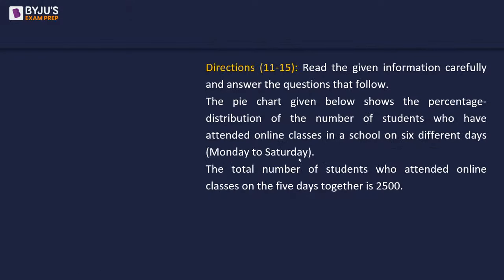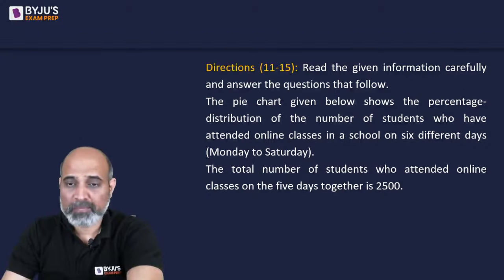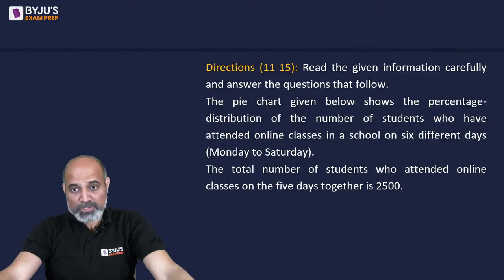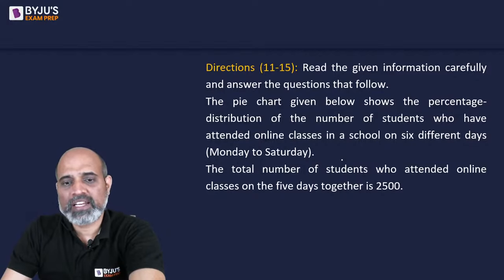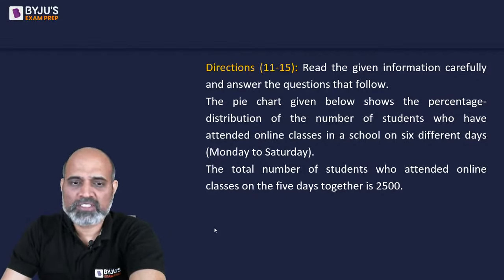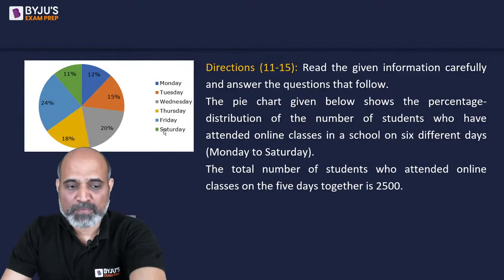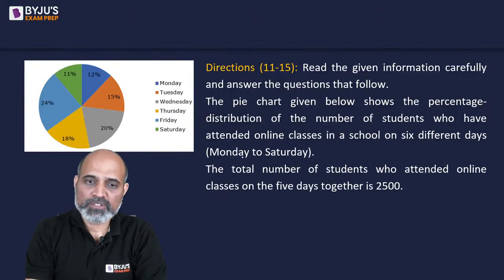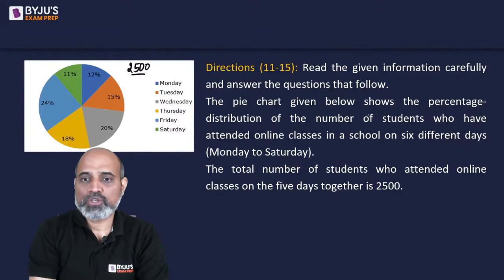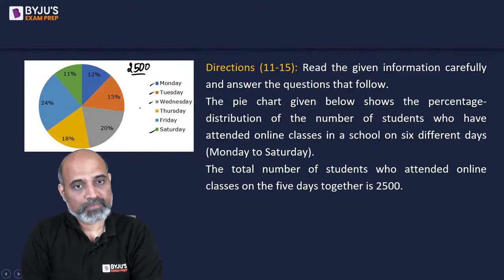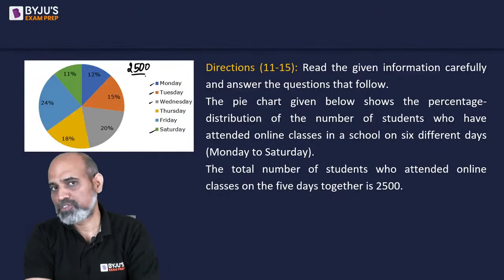Moving to the next set. The pie chart shows the percentage distribution of students who attended online classes over six days (Monday to Saturday). The total number of students who attended online classes across all days is 2500, which is the base of the pie chart. Monday = 12%, Tuesday = 15%, and so on through Saturday.